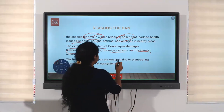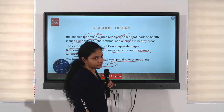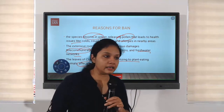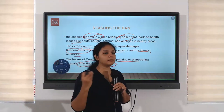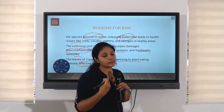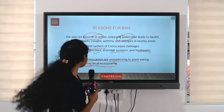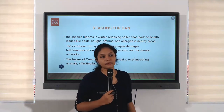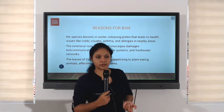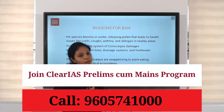The leaves of Conocarpus are unappetizing to plant-eating animals, affecting the local ecosystem as well. Since animals do not approach or eat them, their numbers won't decrease — they will only increase, similar to other invasive species. For exams, remember the names of invasive species. There might be a prelims question on which one is not an invasive species. Conocarpus tree and Cabomba are examples, and water hyacinth was studied already.